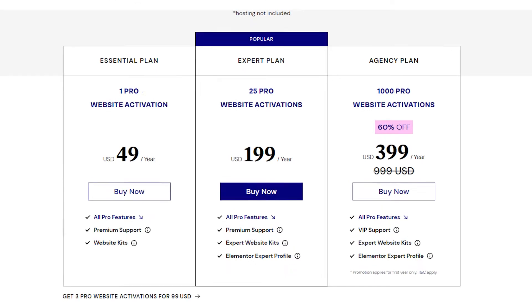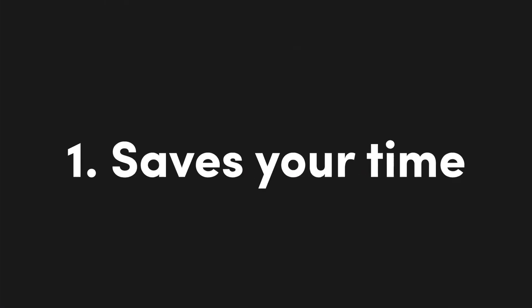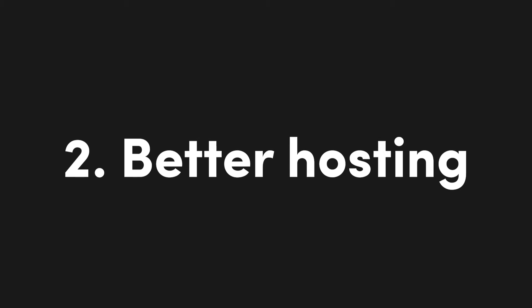For most new sites, you're looking at the $50 to $100 per year range. Elementor Pro is $49 per year, so if you're piecing things together yourself at a bare minimum you're looking at about $99 per year — which is the exact same price as Elementor Cloud. But the hosting you get with Elementor Cloud is much more substantial because it's based on the Google Cloud Platform, which is trusted by top-tier companies and well-renowned for its security and reliability.